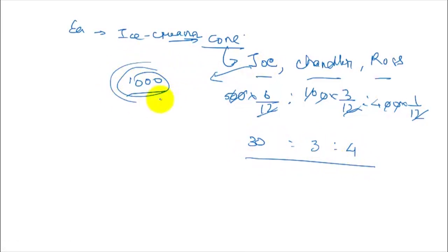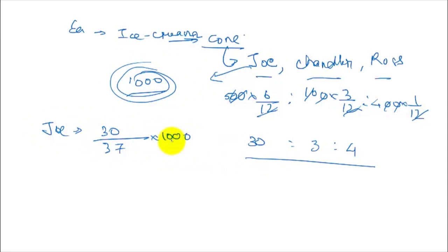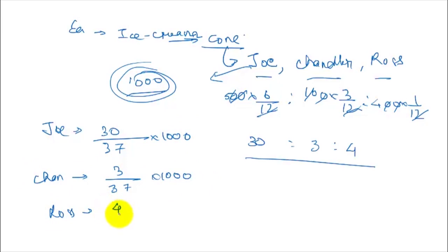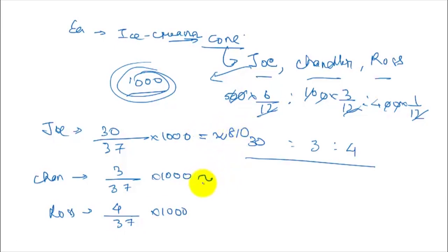So Joey's share is 3/37 × 1000, Chandler's share is 3/37 × 1000, and Ross's share is 4/37 × 1000. The values come out to approximately ₹81 for Joey, ₹81 for Chandler, and ₹108 for Ross.